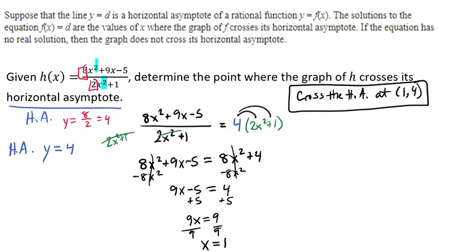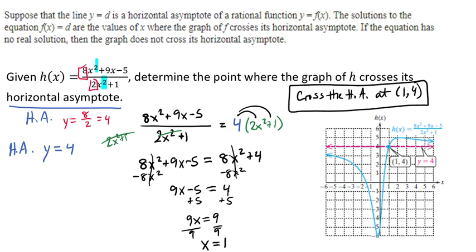Let's take a look at the graph just so we can visualize that a little bit better. So here we have the graph of our equation in blue, and the pink dashed line is our horizontal asymptote at y equals 4. And we can see that right here at (1, 4), which is where we just found, that is where our function crosses our horizontal asymptote.